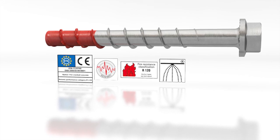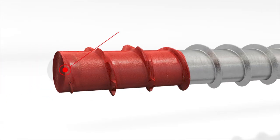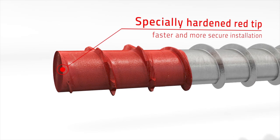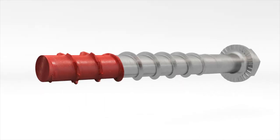The Ultracut FBS2 A4 is made of corrosion-resistant stainless steel, ideal for outdoor areas and wet conditions. The specially hardened red tip provides faster and more secure installation. Certified for C1 and C2 seismic performance categories in earthquake zones.